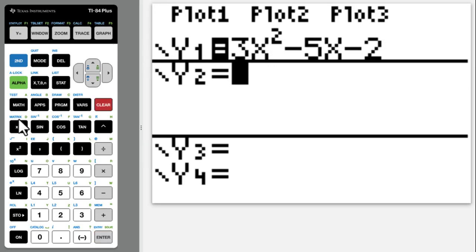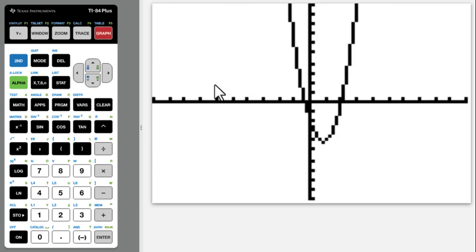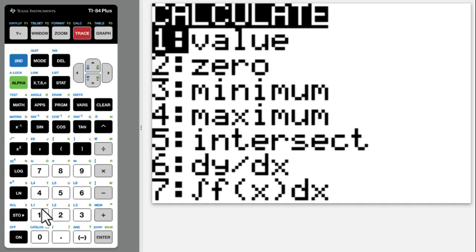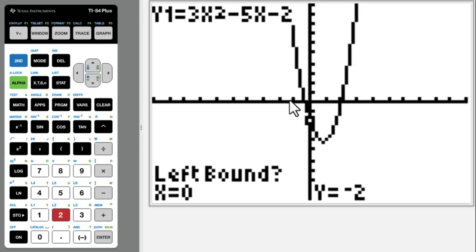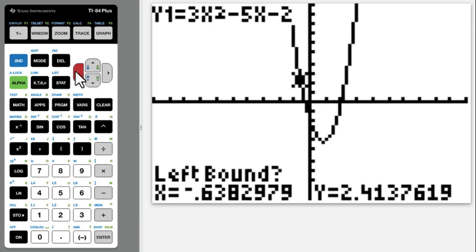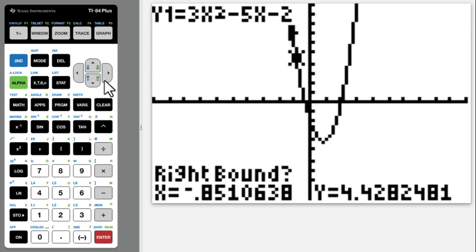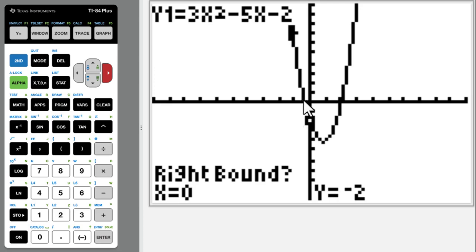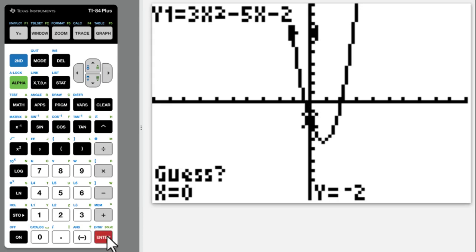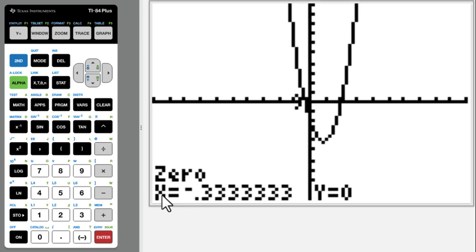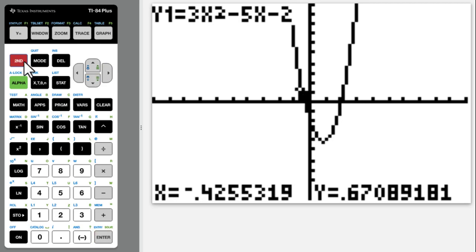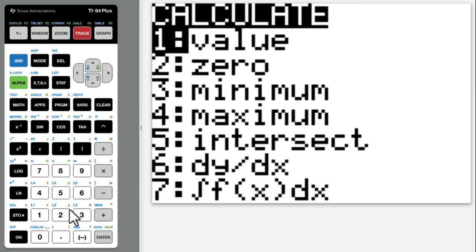After we figure out zeros from equation solver, we can figure out zeros from graphing. Second trace 2. The left bound of this x intercept, enter. Then right bound of this x intercept, enter. You could see we get the same answer, negative 1 over 3.